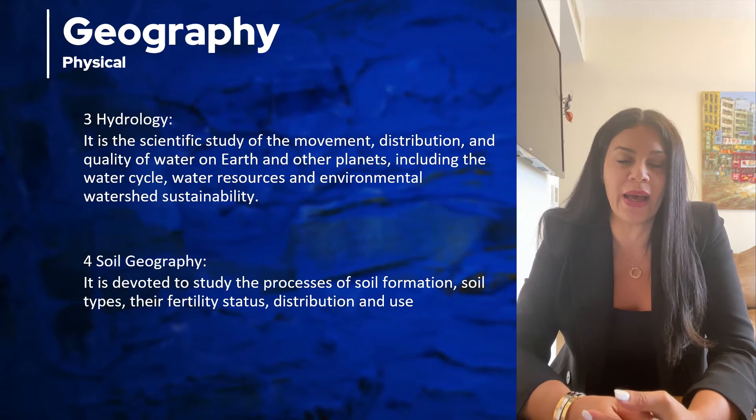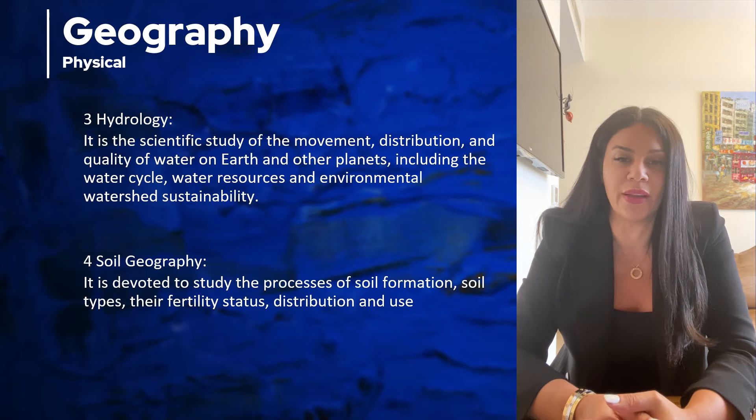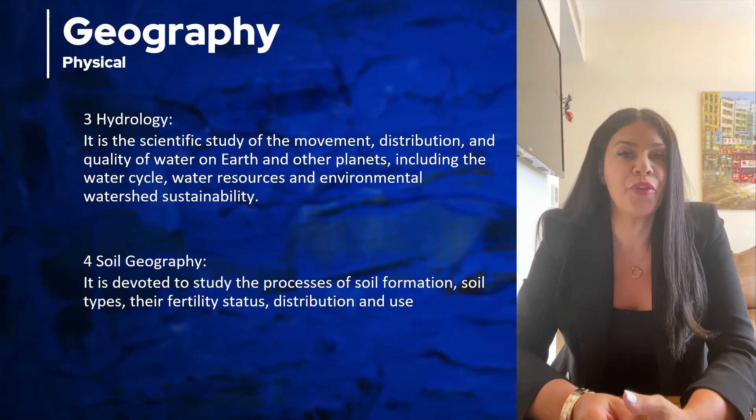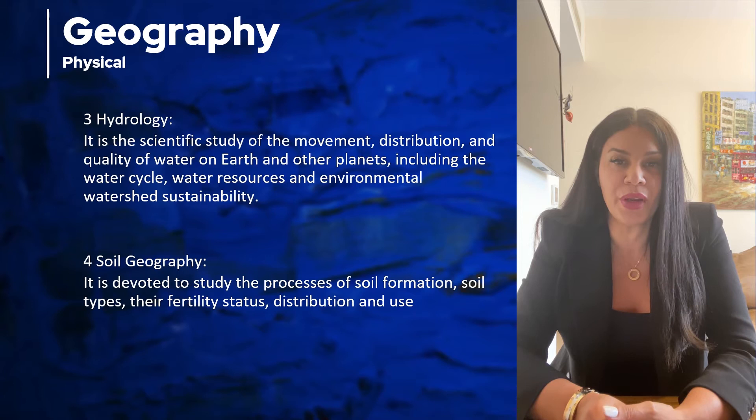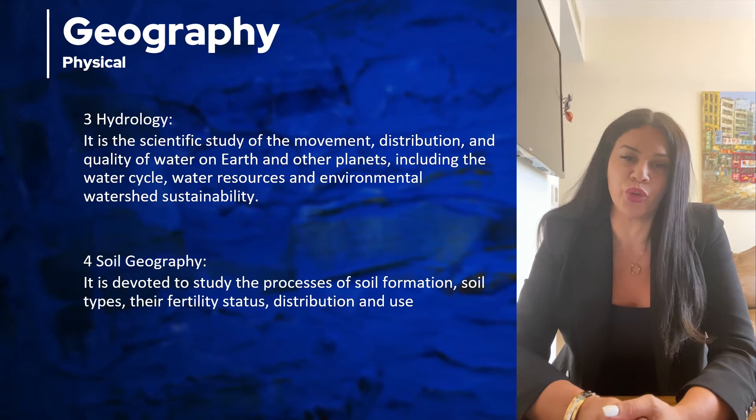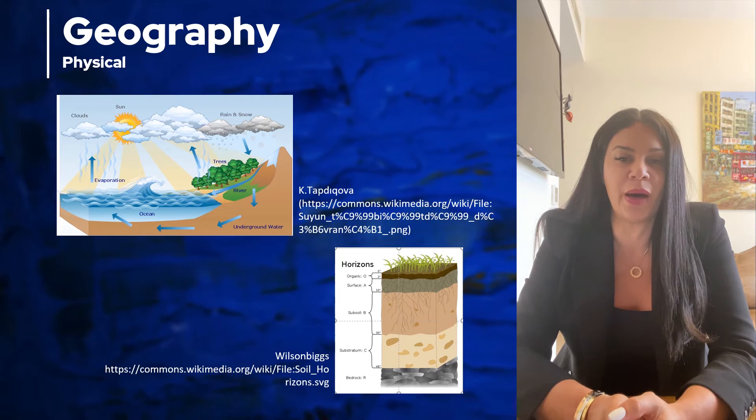How much water do we have on Earth? We have 79% of water, which means we have only 29% of land. And from that 79% of water, there is 97.3% salt water and the rest 2.7% fresh water. So the water forms or water bodies are studied by the topic hydrology.